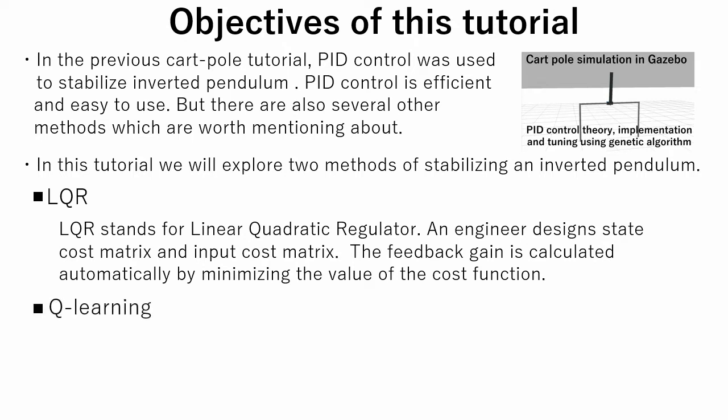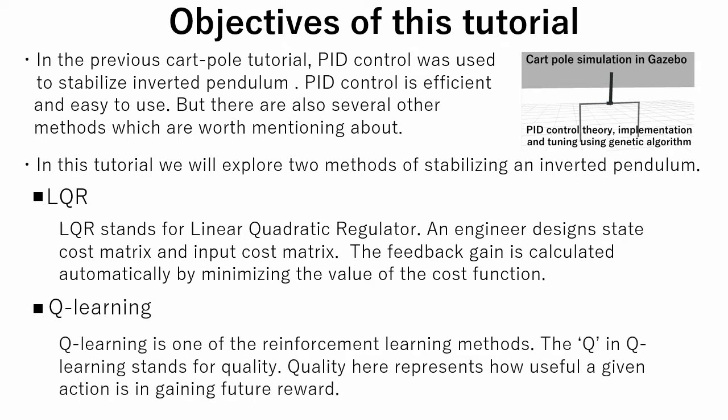The second is Q-Learning, which is one of the reinforcement learning methods. The Q in Q-Learning stands for quality. Quality here represents how useful a given action is in gaining reward.